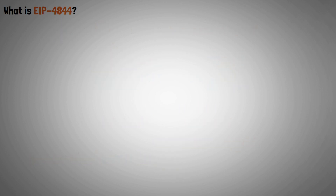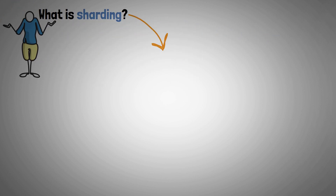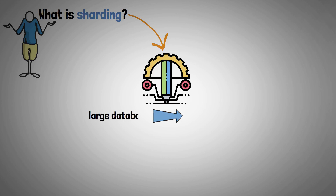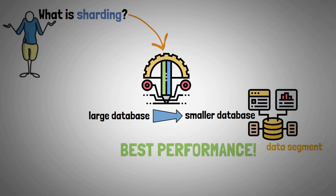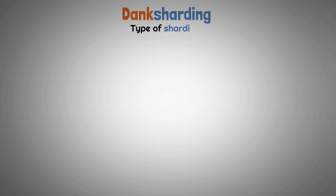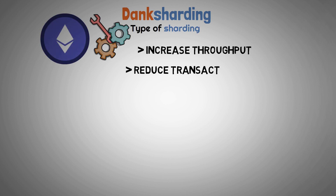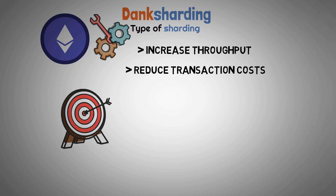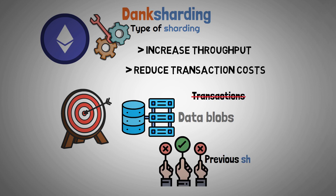To comprehend EIP 4844, let's describe what sharding is. It's a technique for dividing large databases into smaller ones that manage particular data segments, enhancing the effectiveness and performance of these databases. Danksharding is a type of sharding that Ethereum intends to use to increase throughput while reducing transaction costs. It aims to provide more space for data blobs rather than transactions, which is one of the main differences between it and previous sharding proposals.